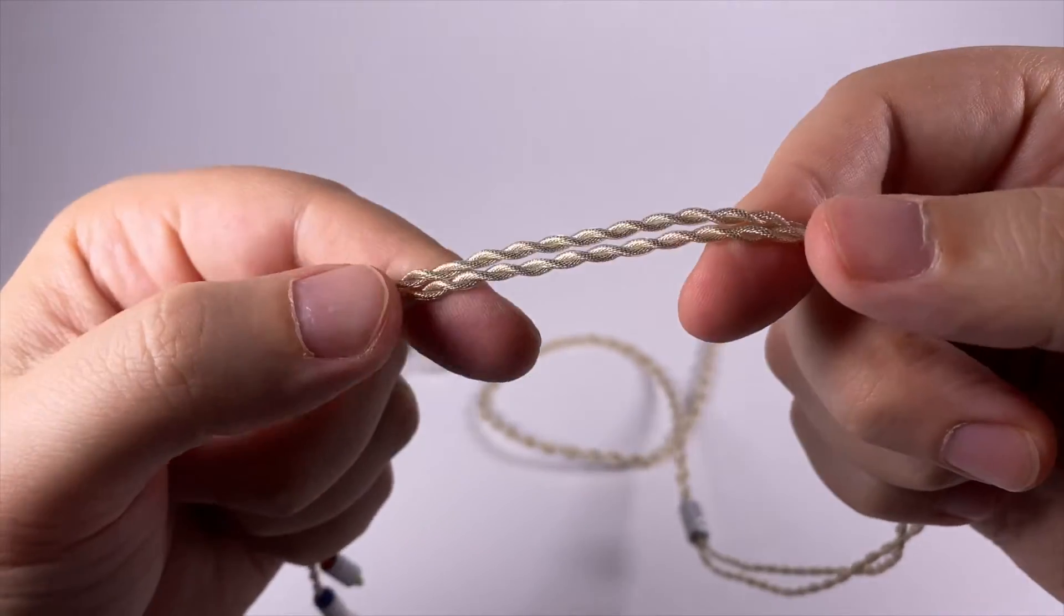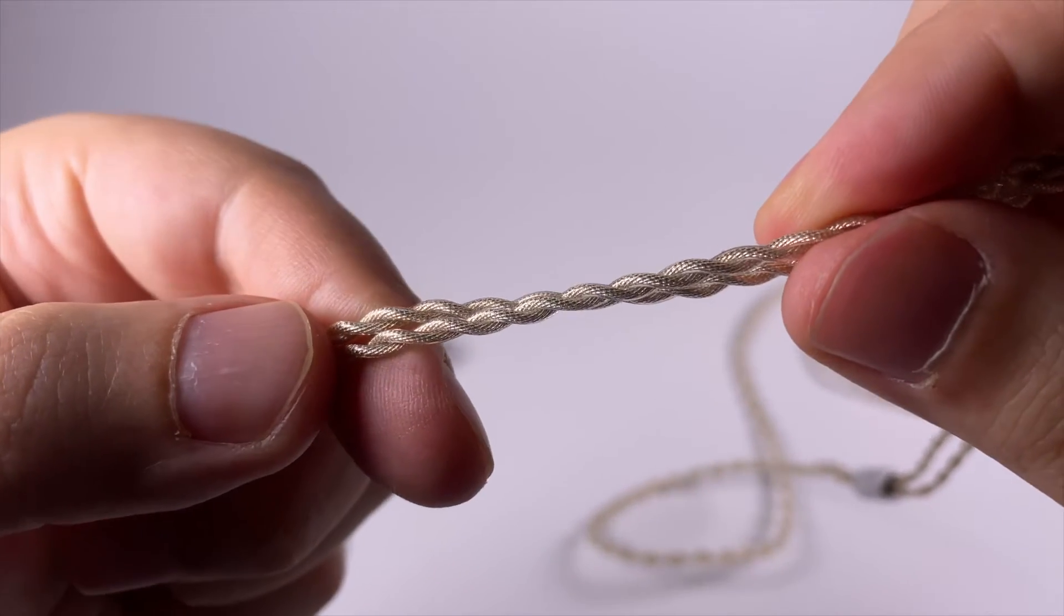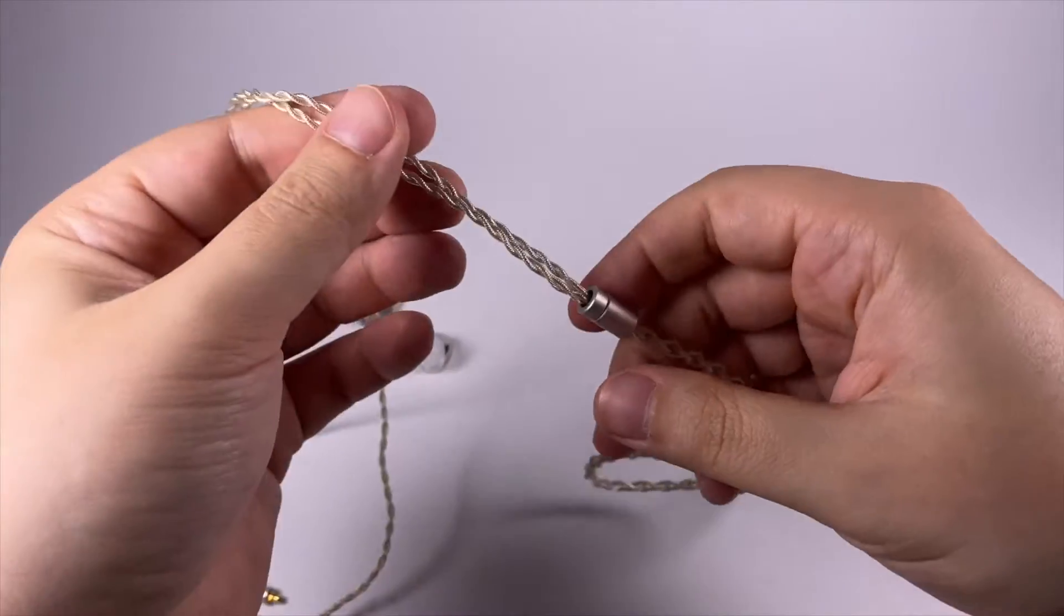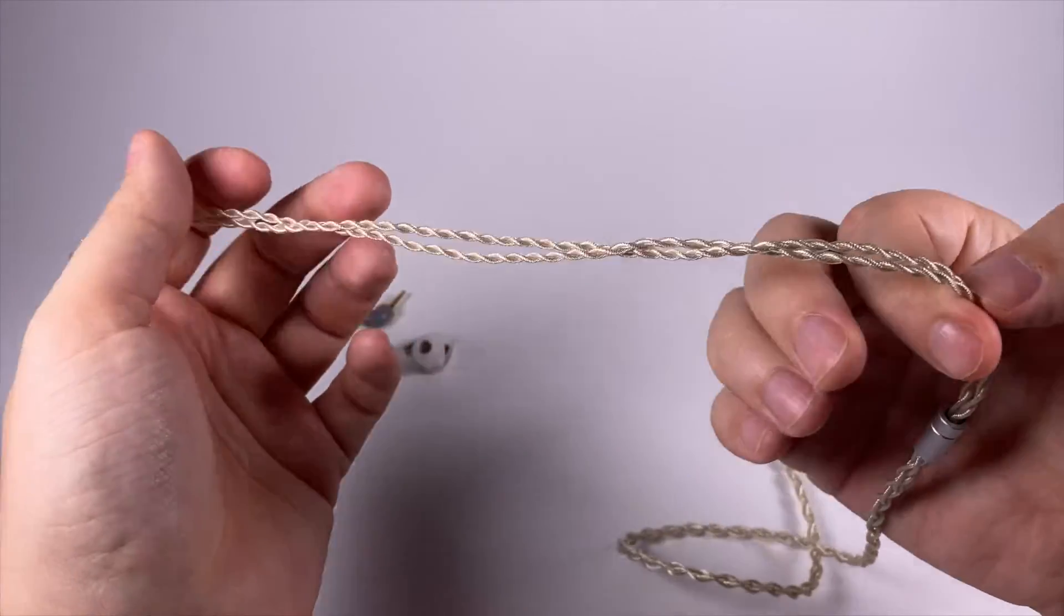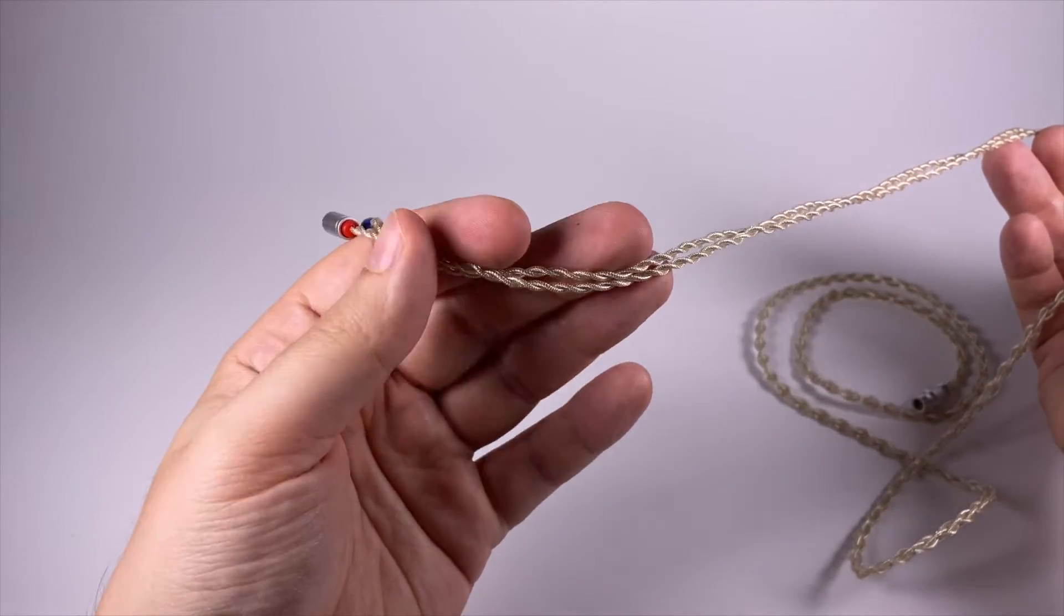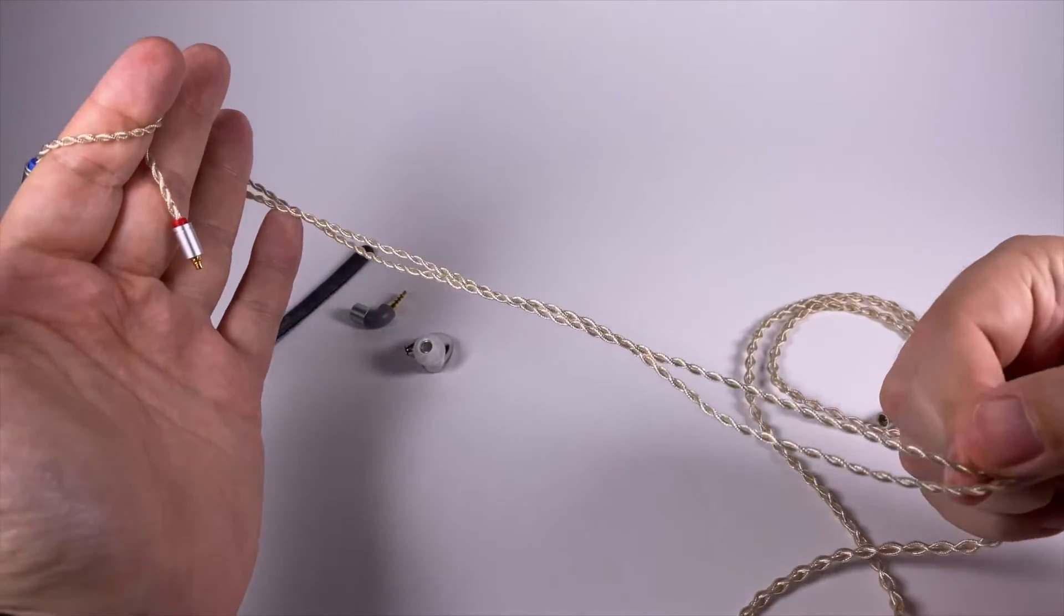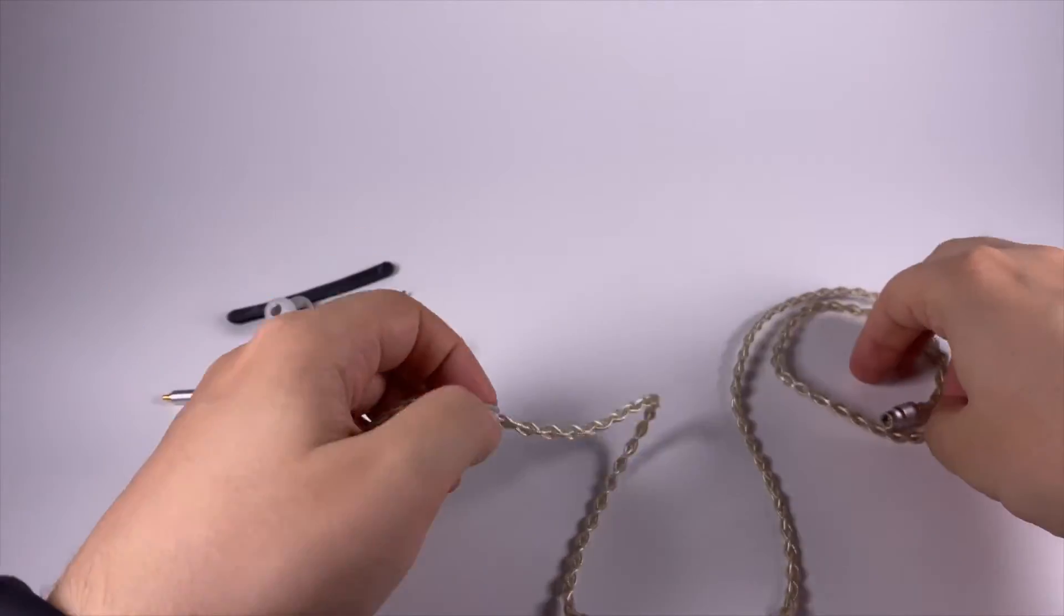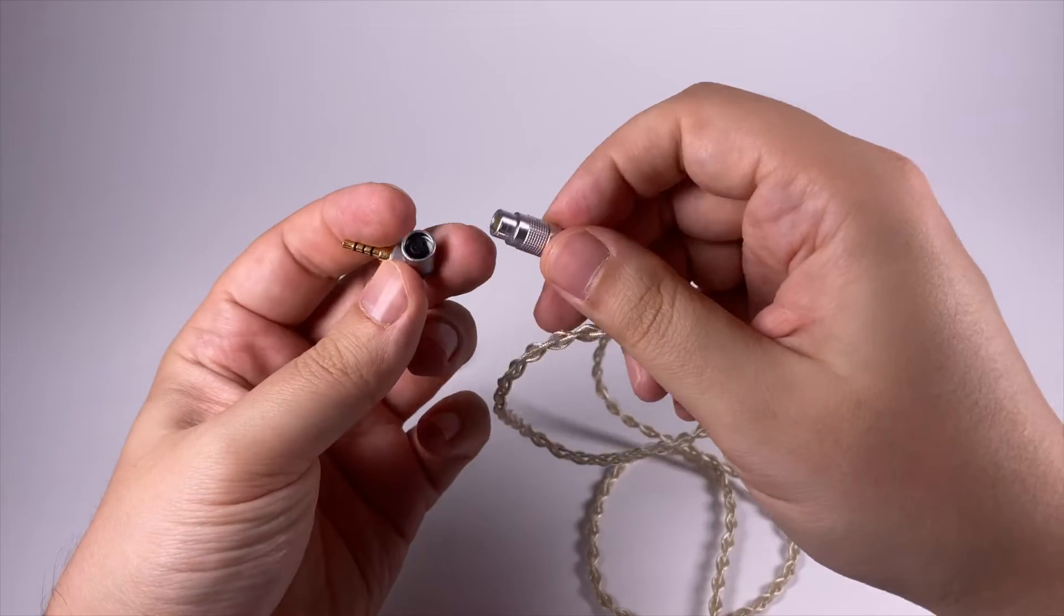Cable itself is also pretty nice, looks fancy. You can see braiding inside, it's twisted, it's slightly softer than average - not super soft but of course pretty comfortable with low microphonics, without any issues, no memory, no ear hooks, no memory wire. So just soft cables that will go around your ears naturally. Here is the splitter with chin slider, and it goes braided down to this connector.